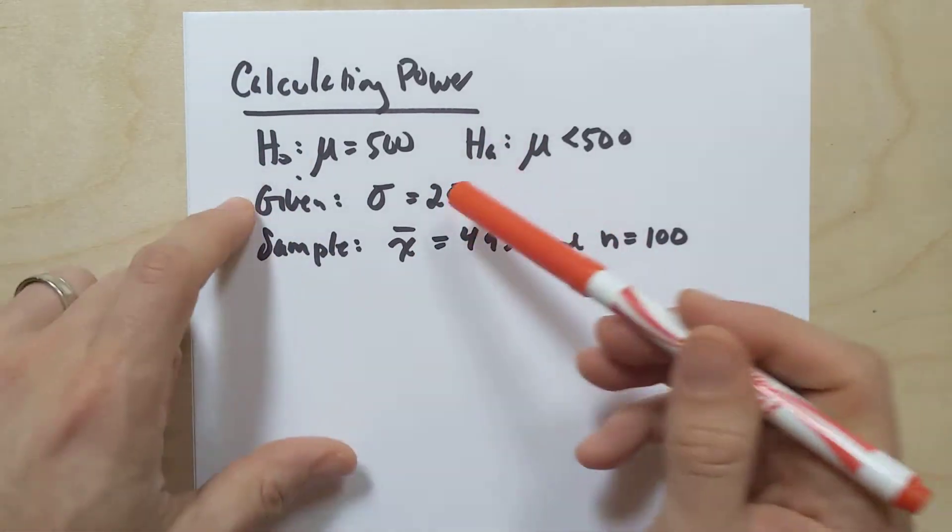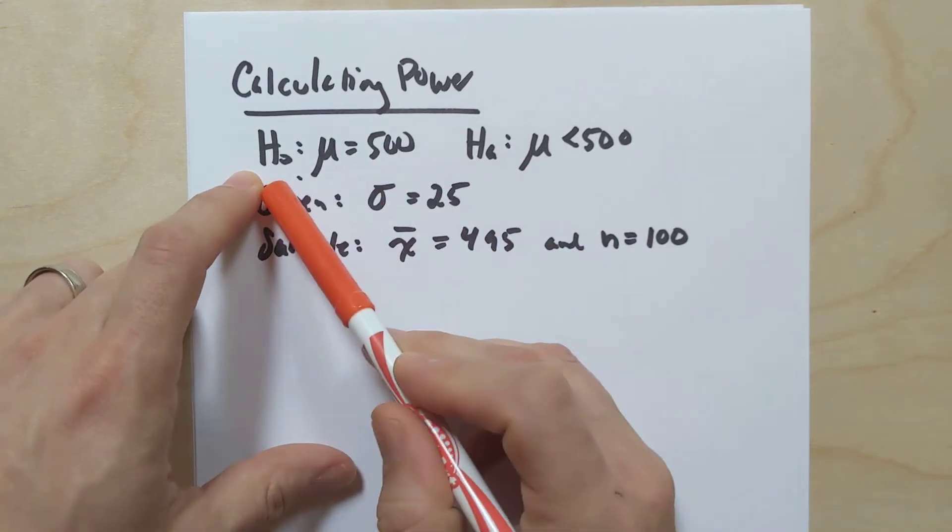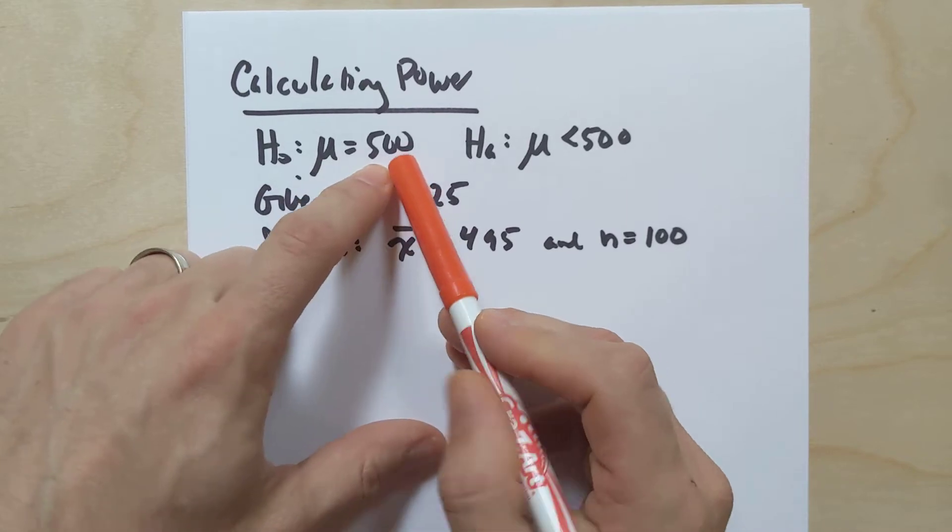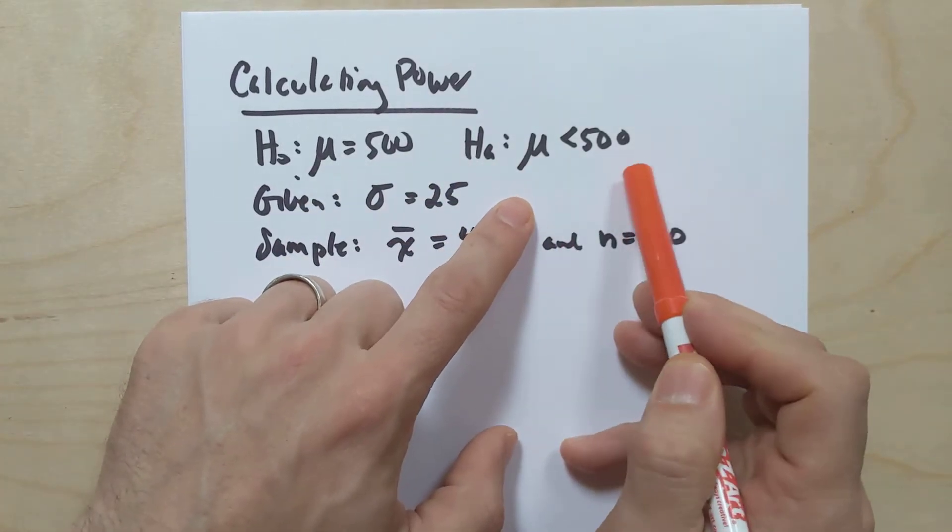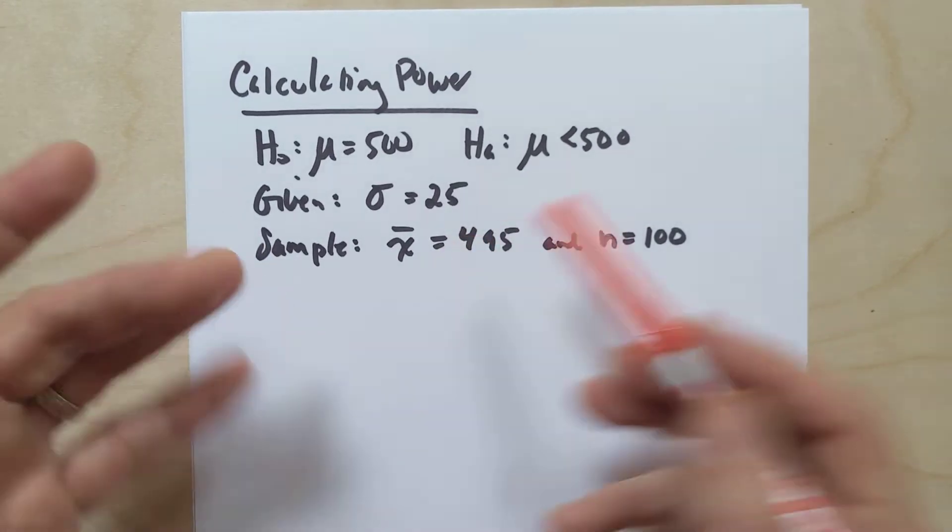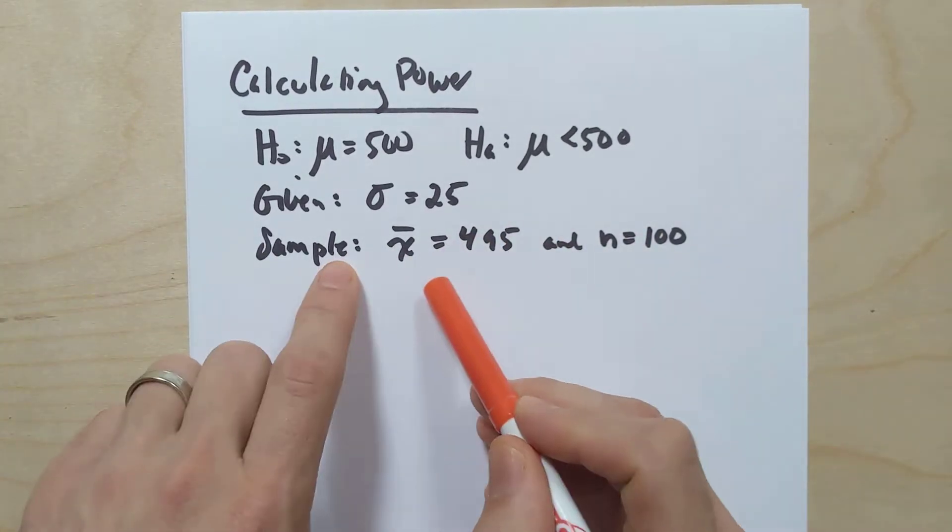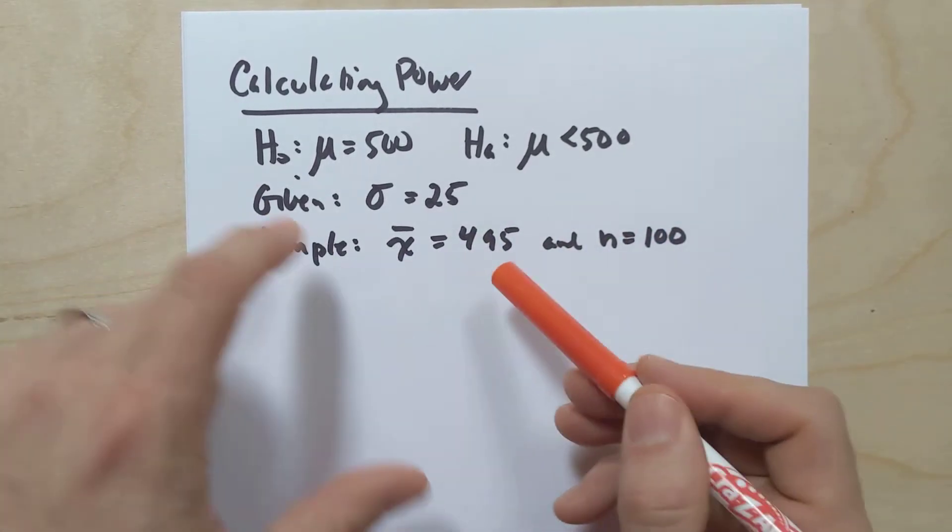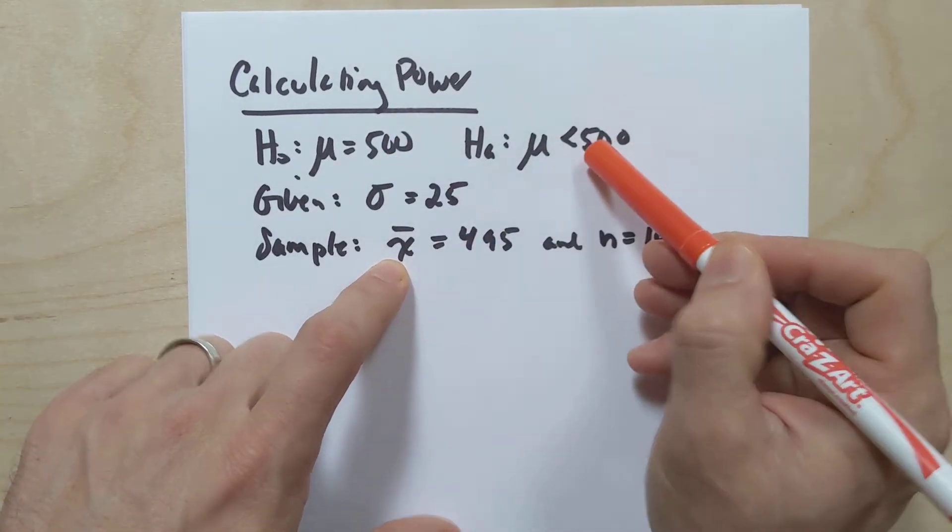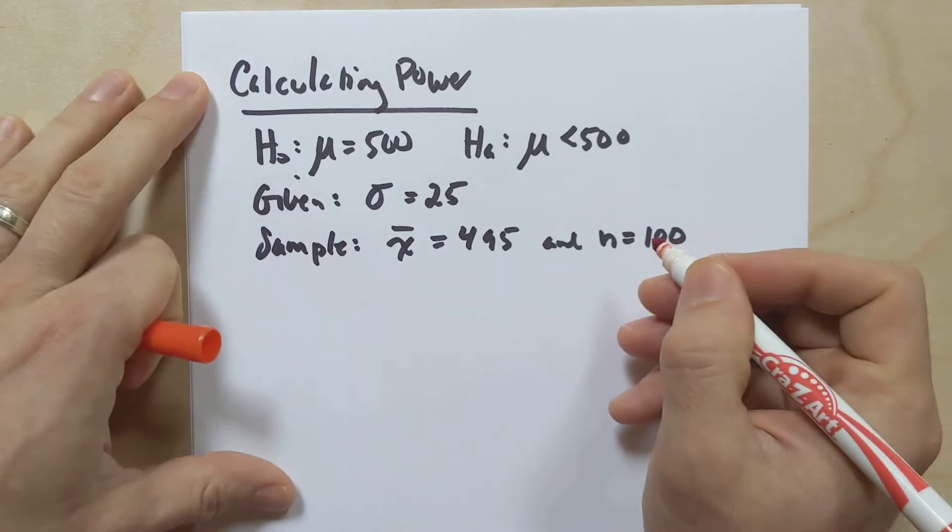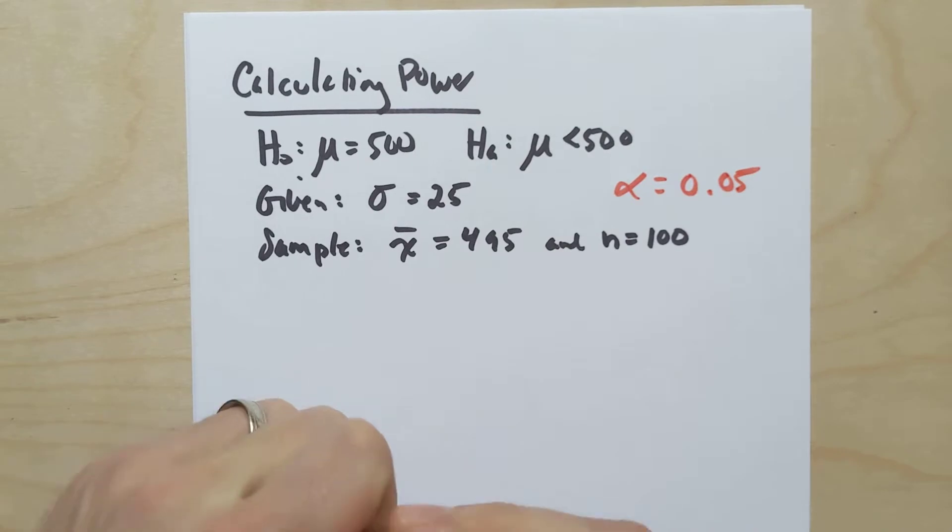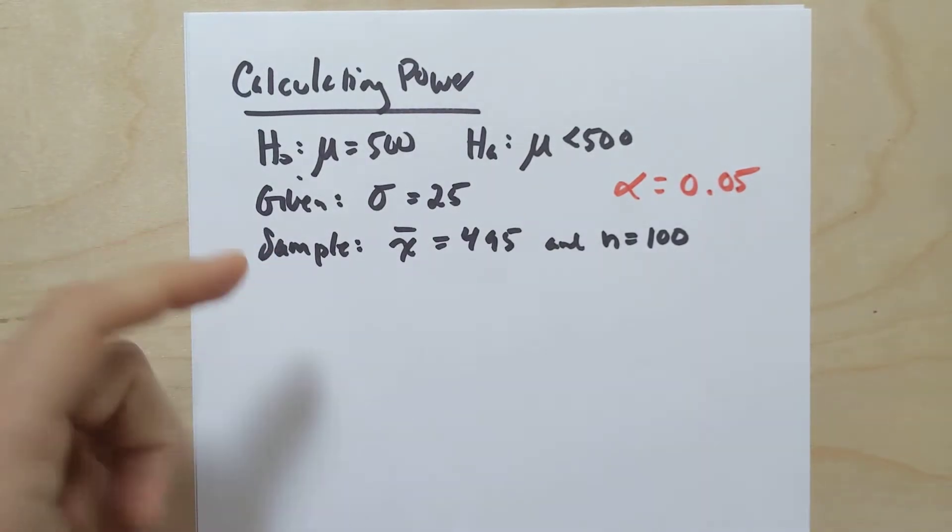So all right, let's look at this particular situation. Let's say we have a null hypothesis that the true mean is 500, and the alternative is that the μ is less than 500. Let's say we know the population standard deviation is 25, and then we collect a sample of 100 things, and we find a sample mean of 495. Now, we see that this is evidence against the null hypothesis in favor of the alternative, and so let's carry out the test at, let's pick a level of significance, say alpha equals 0.05, because it's one of our lovely go-tos, and let's see what happens.